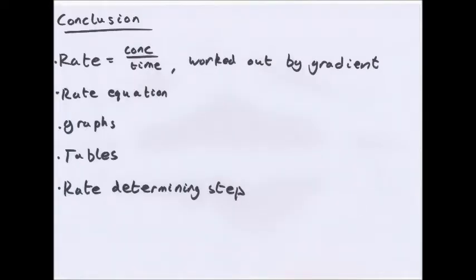So, in conclusion, rate equals concentration over time worked out by the gradient of a graph. You have the rate equation which is rate equals K A to the M B to the N. You can work out by graph, so you can get rate over concentration and concentration over time. You can also use tables. And many reactions have a rate determining step which is the slowest step of a reaction. So, thank you for watching. As usual, any questions feel free to ask and thank you and goodbye.